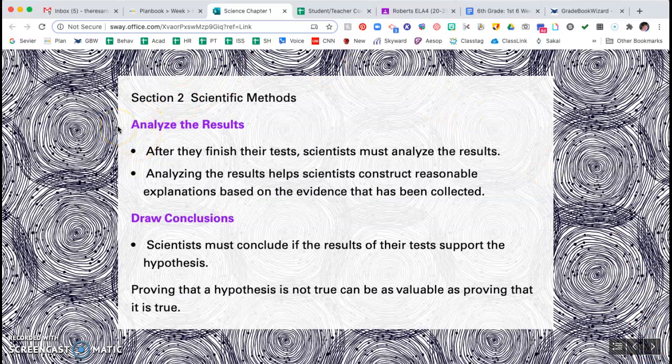Next, you're going to analyze the results. This involves constructing reasonable explanations based on the evidence that has been collected. For instance, the frogs with the UV light. Think about why they would have studied that. Why do you use sunscreen? Do you think that was tested on humans to begin with? Probably not.